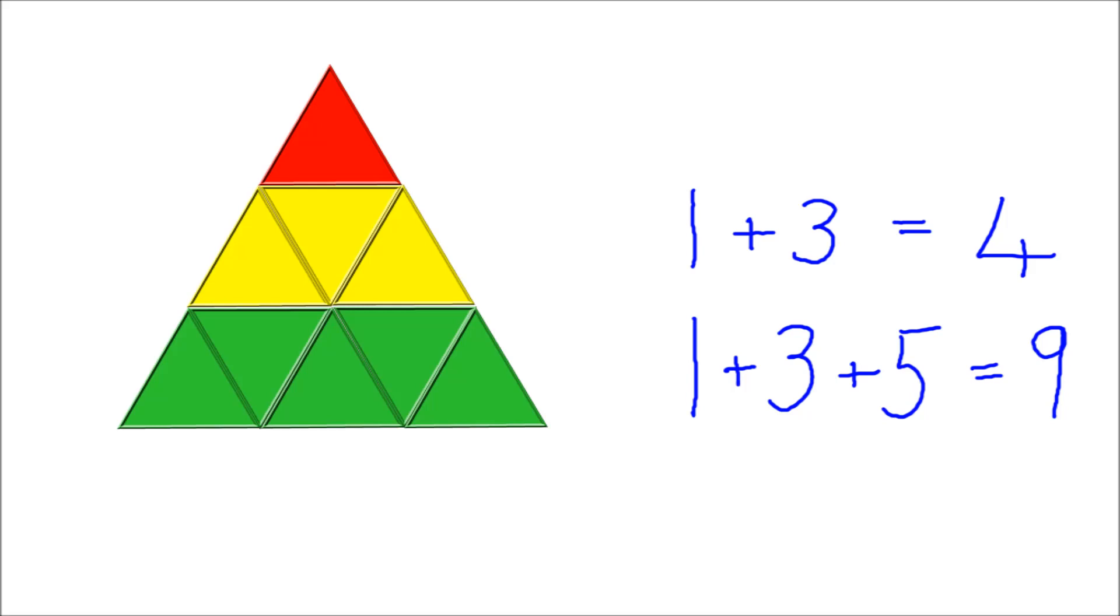And then if we add on another row of triangles to make a bigger triangle, a 3x3x3 triangle, we now have one plus three plus five triangles. So we have nine triangles. And if you continue this pattern, you'll see that,